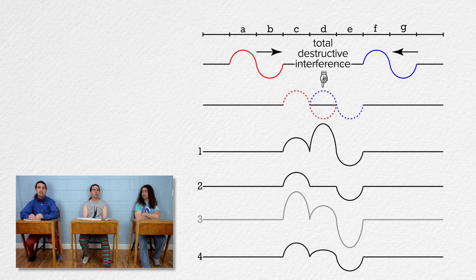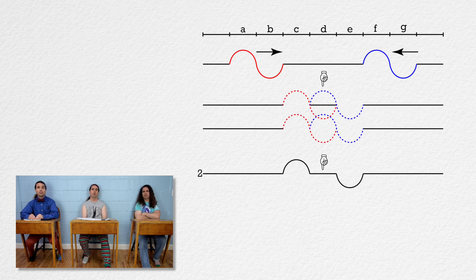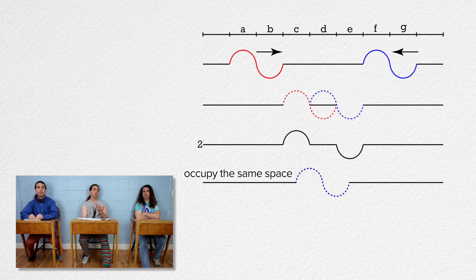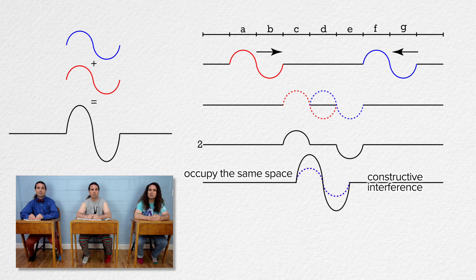Right, so the correct answer is 2. Correct. But what happens when the two waves occupy the same space? Then the waves actually end up having the same exact shape in the same location and we get constructive interference. That means the resultant wave has twice the original amplitude as the two original waves.